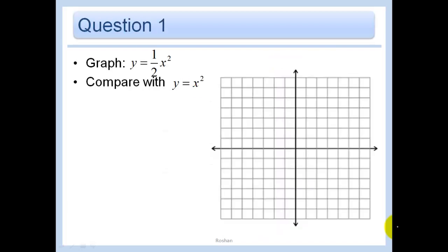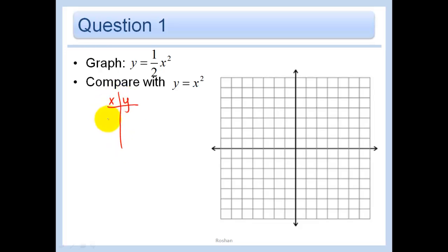Let's start by graphing y equals one-half x squared. Much like when we were doing our absolute value graphs, we're going to compare this with just the parent function. Just like we had the factor of vertical shrink or stretch, this one-half is going to indicate that my graph is wider than y equals x squared. Let's graph some points with a table of values, using x values negative 2, negative 1, 0, 1, and 2. When we put in negative 2, we start with exponents first: negative 2 squared is positive 4, and one-half times 4 is 2.